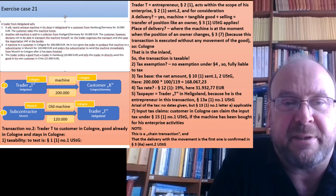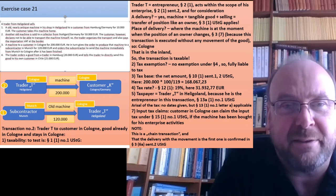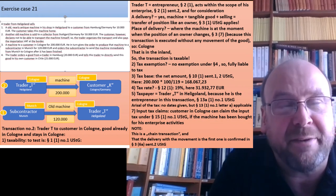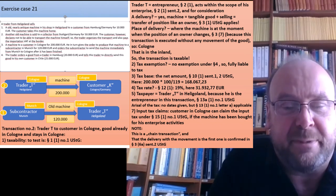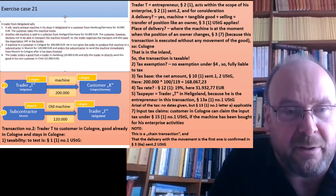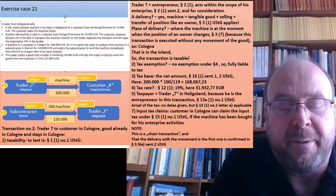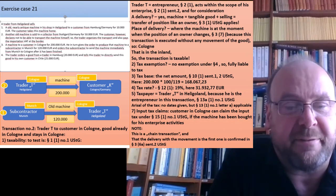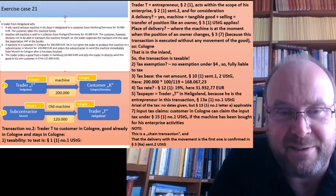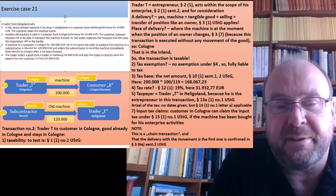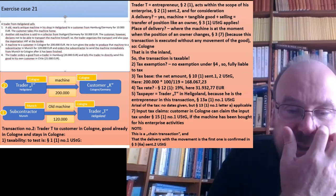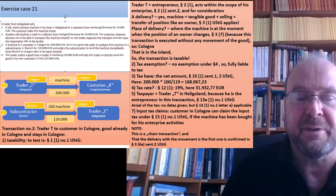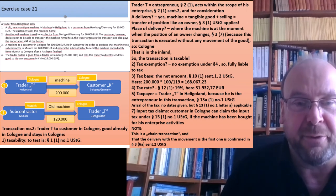This is called a chain transaction — a transaction where the good is sold twice, thrice, or more times, but only moved once, directly from the first to the last in the chain. That is sometimes said to be complicated, but as you see here, if you follow the basic rules it is entirely easy. The German and EU legislators have clarified which delivery the movement of the good is attributed to, confirming that the first delivery is indeed the one bearing the movement of the good.